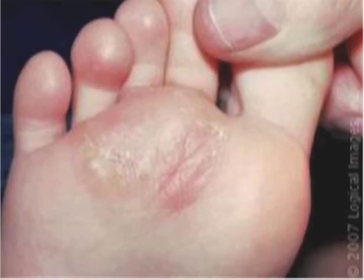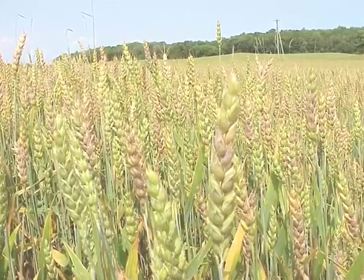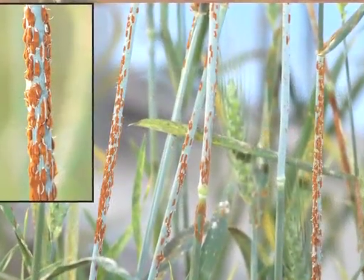Not all fungi are useful — there are harmful fungi as well. They cause diseases such as athlete's foot and ringworm, which is very common during the rainy season or hot summer months. Fungi can also cause harm to plants — for example, red rust disease in wheat, causing patches on the leaves and stem of the wheat crop, reducing the yield. If this contaminated wheat is eaten, it can even cause cancer in human beings.